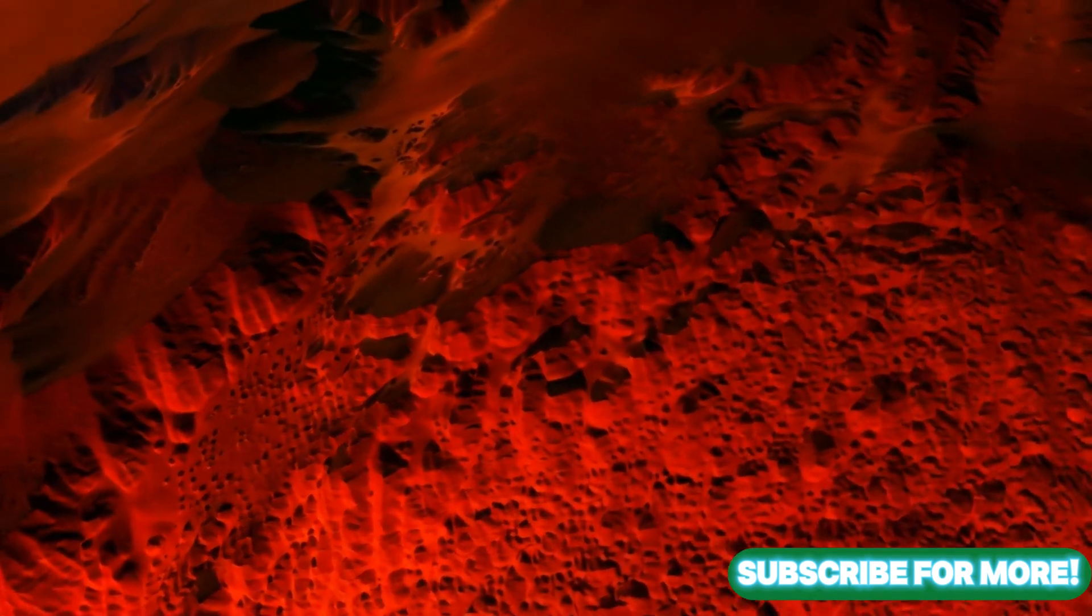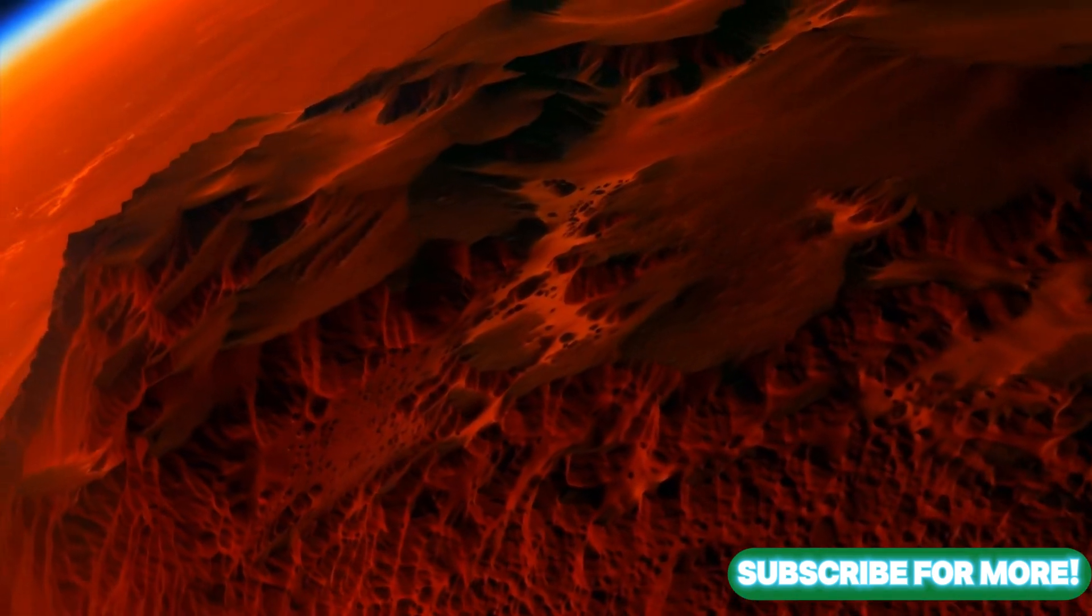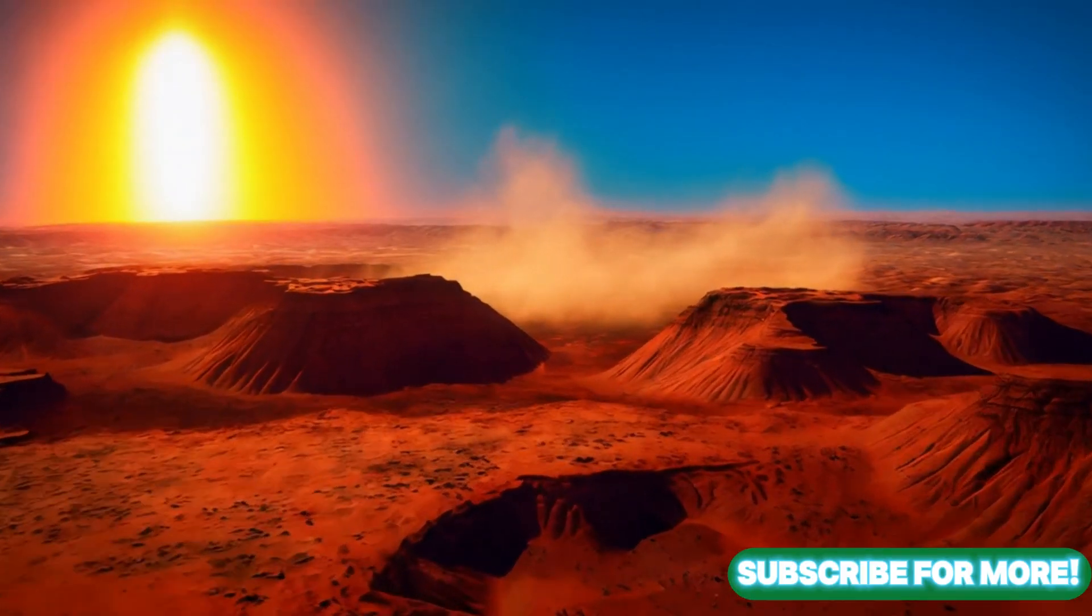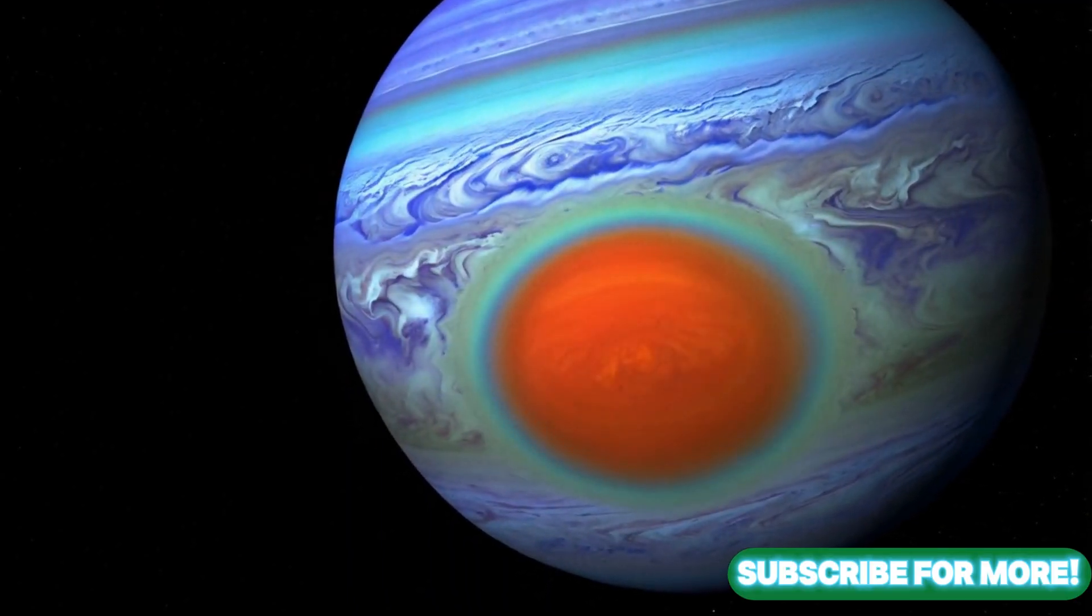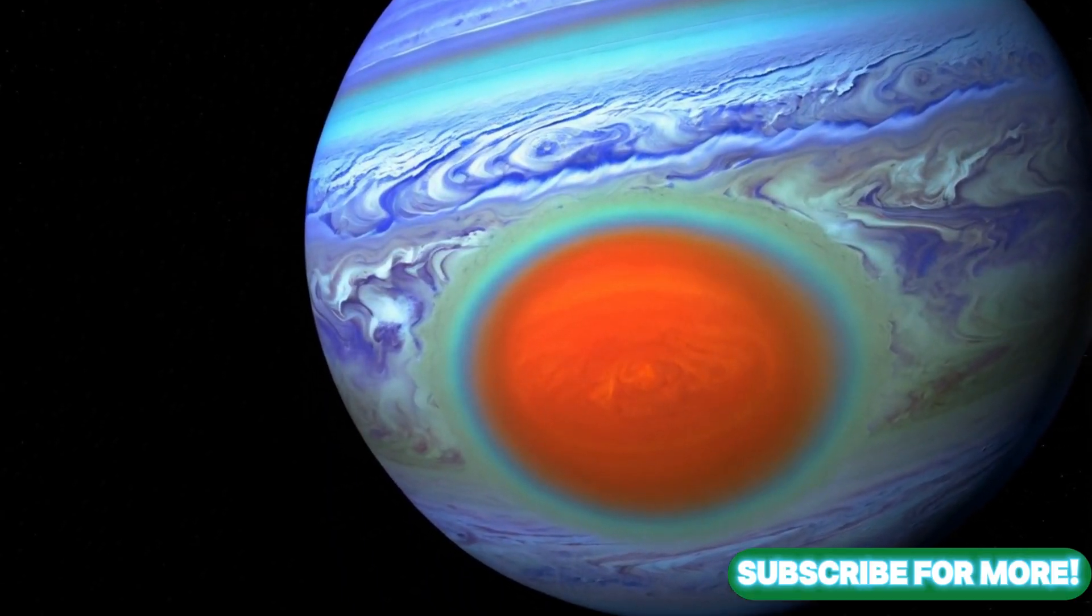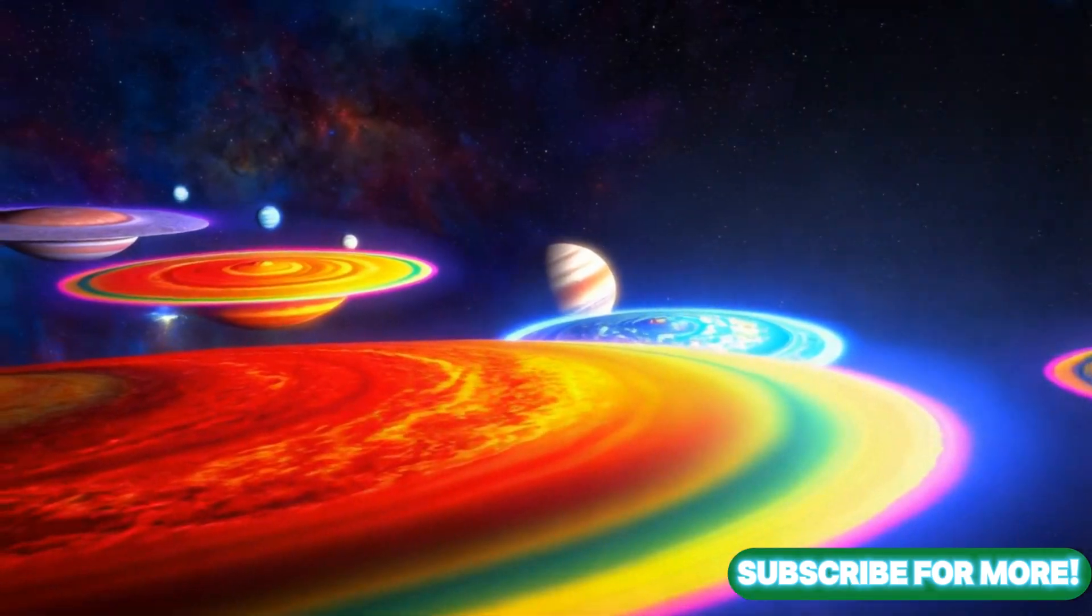Four is Mars, the red dusty one, mountains and valleys under the sun. Five is Jupiter, the largest of them all, with its giant red spot, it's a gas ball.